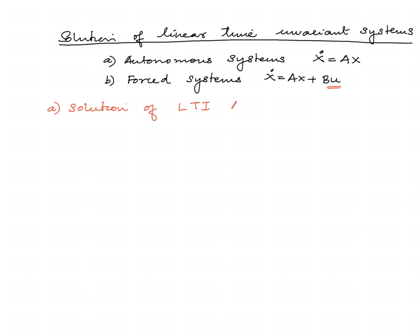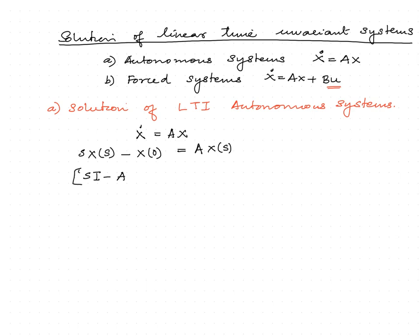Let us consider an LTI autonomous system represented by x-dot equal to Ax. In order to obtain the solution, we first take the Laplace transform of the given equation. That is: s·X(s) minus x(0) equals A·X(s). Moving X(s) terms towards one side, we have (sI minus A)·X(s) equal to x(0).